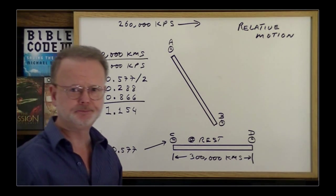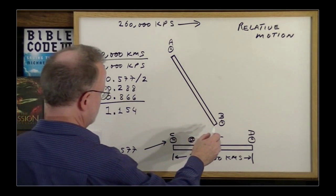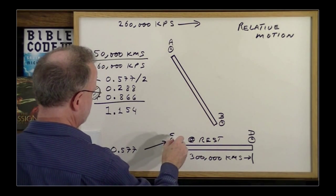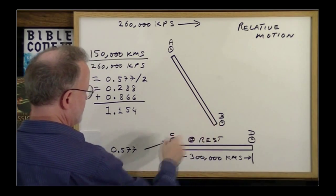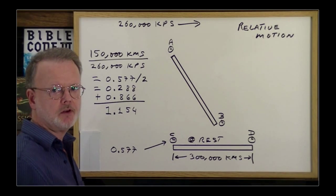So what does all that mean? Well, when Mr. B was lined up with C, he noticed the clocks were synchronized, so he tells Mr. A that when I was lined up with clock C, both our clocks said 12 o'clock.